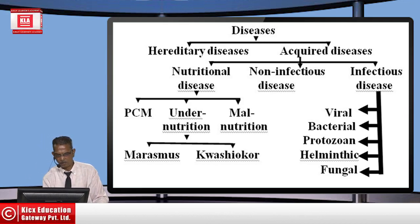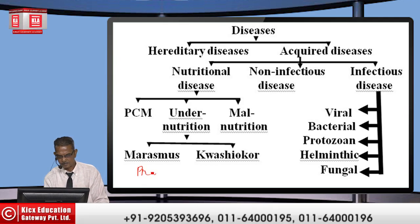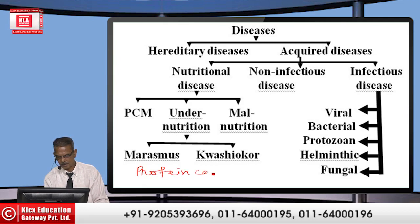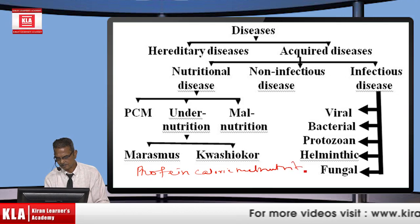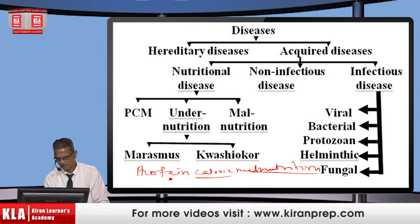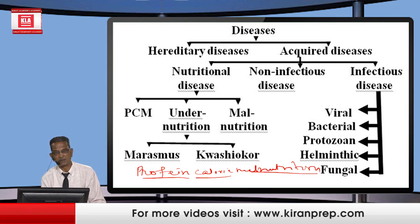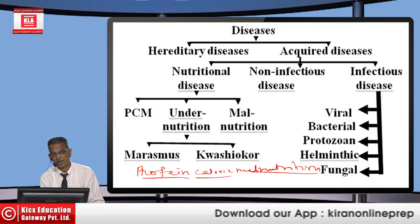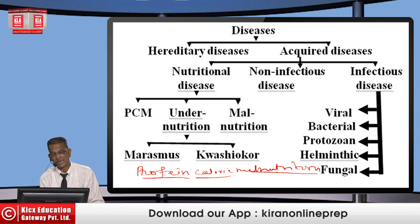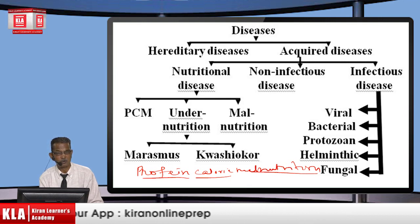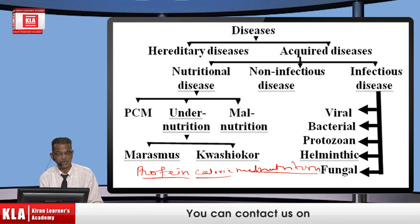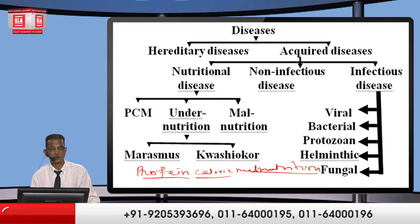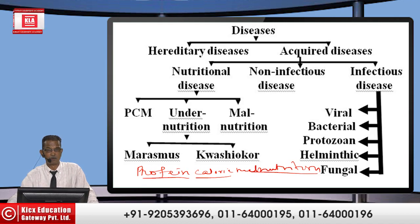Nutritional diseases are categorized into three types, the first being PCM — Protein Calorie Malnutrition. This means a person's diet has a deficit in protein and is also failing to meet energy requirements of about 2,000 to 2,800 kilocalories per day for an infant.